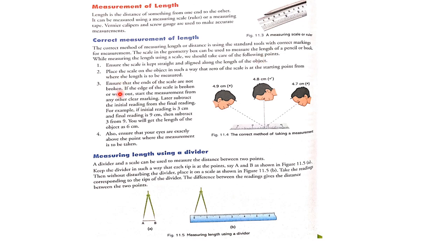Number one: ensure the scale is kept straight and aligned along the length of the object. Number two: place the scale on the object in such a way that zero of the scale is at the starting point from where the length is to be measured.